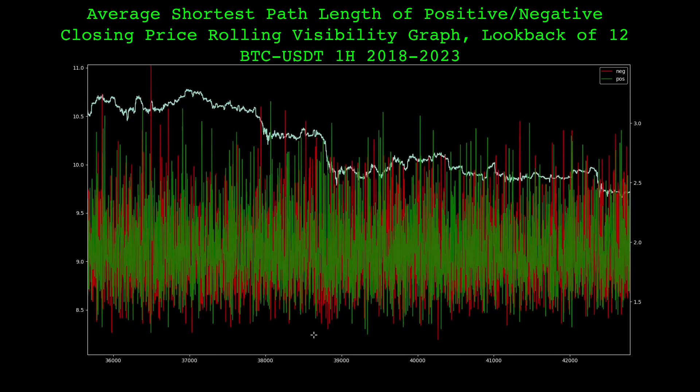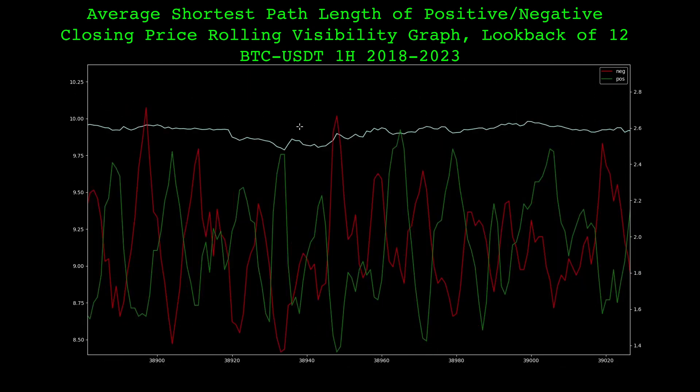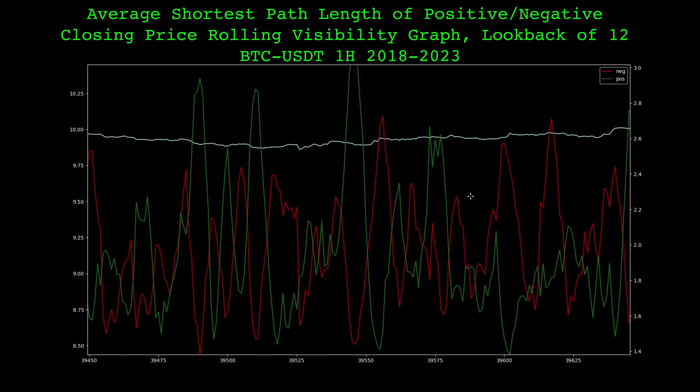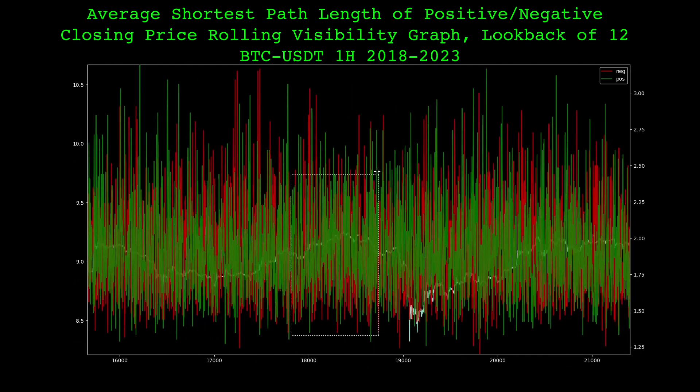Here is a plot of the average shortest path length from our rolling visibility graphs. The two outputs are stationary throughout the data, and it looks like an indicator to me. We know this is the average shortest path length of the visibility graphs, but what does this tell us about the price?